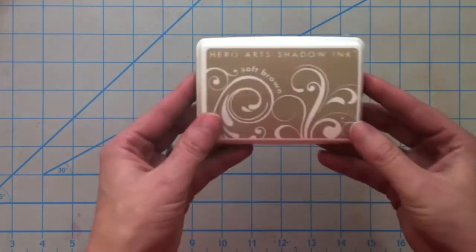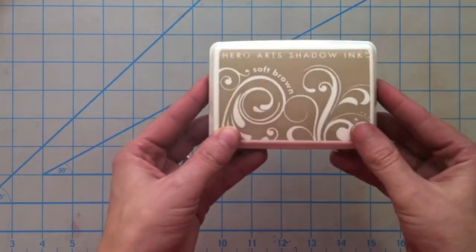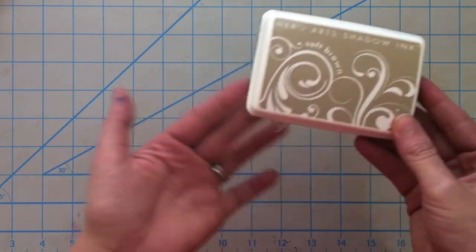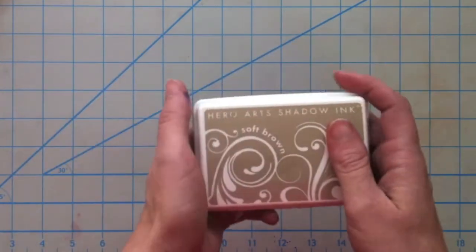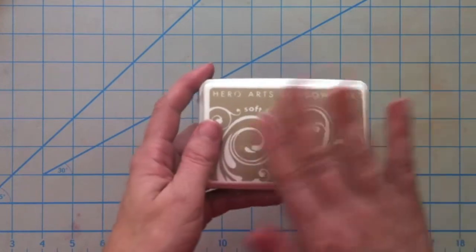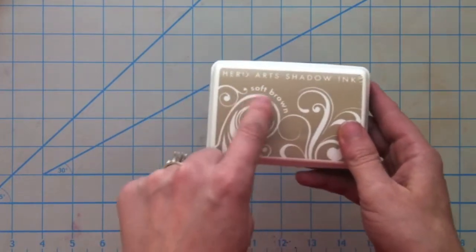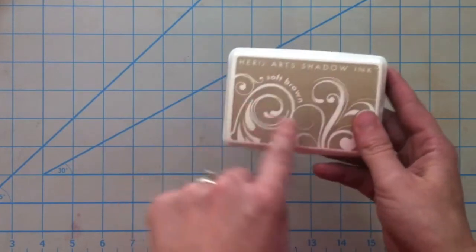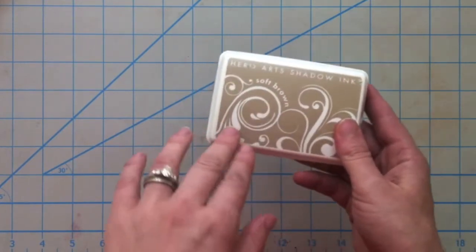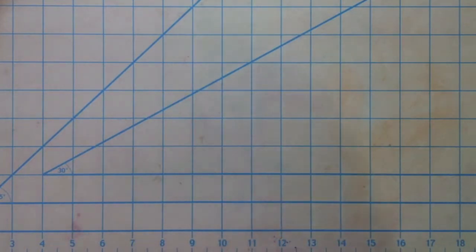I picked up this Hero Arts Shadow Ink in Soft Brown. I saw this color, it might have been on Mary Dawn's blog My Pink Mexico, and I really liked it. So now I've got Soft Brown and the only other brown I want to add to my collection at some point is Cup of Joe and then I'll have all the browns that I want.